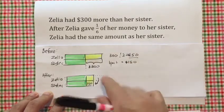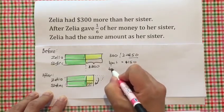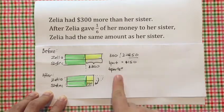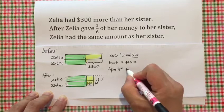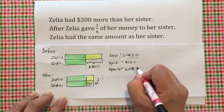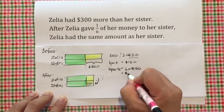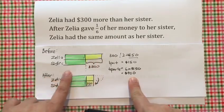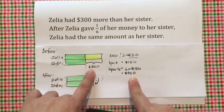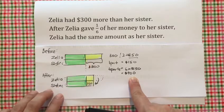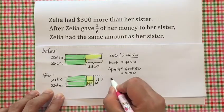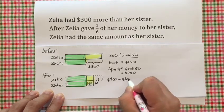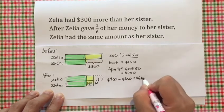Now, Zelia has six parts of money because if she didn't give away her money, she had all six parts. So, before she gave away, that will be her amount of money — six parts. Six times $150 equals $900. Before giving the money away to her sister, sister had $300 less than Zelia. That means sister would have $900 minus $300, which is $600 to begin with.